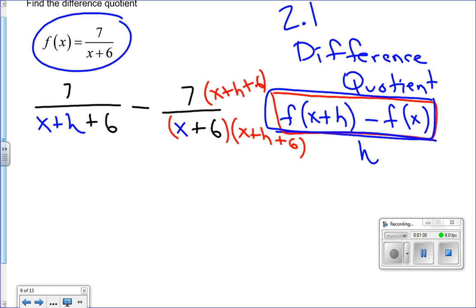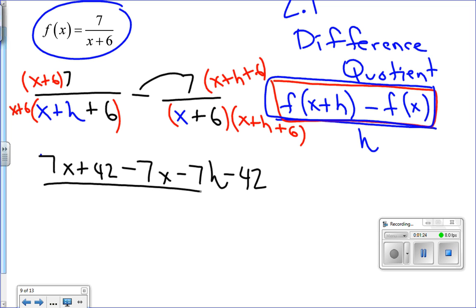And then the first fraction by x plus 6. Distributing through, it looks like we'll get 7x plus 42, then minus 7x minus 7h, and then minus 42. The subtraction sign goes with the 7. That's all over the common denominator of x plus 6 times x plus h plus 6.